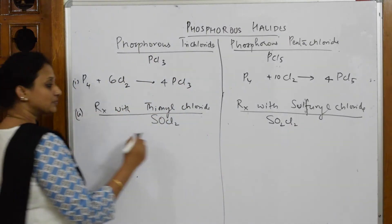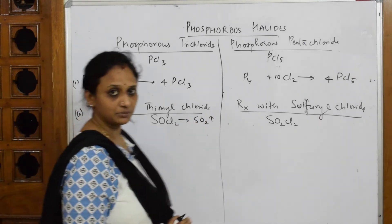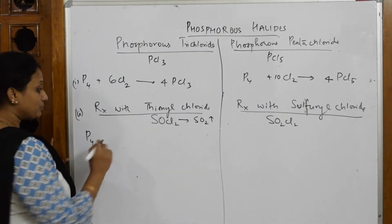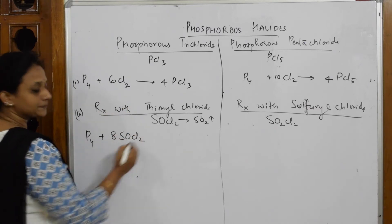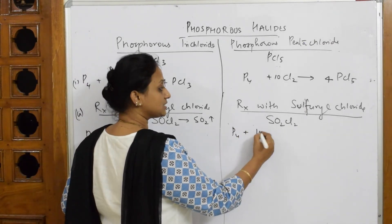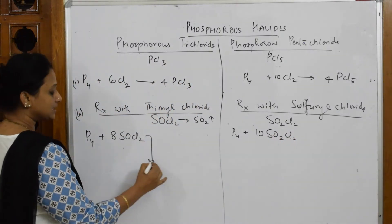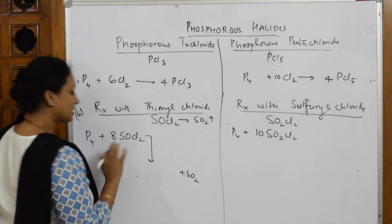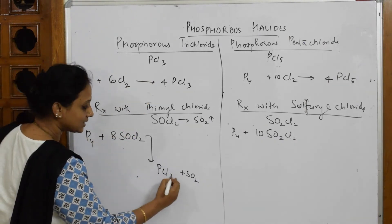An important thing: whenever you take thionyl chloride, the gas which is released as a byproduct is sulfur dioxide gas. Now, in the reaction: take P4 with thionyl chloride. Suppose the paper gives you 8 moles of thionyl chloride. From thionyl chloride, you get sulfur dioxide gas as a byproduct, and you also prepare PCl3.